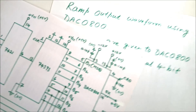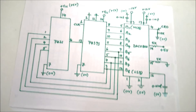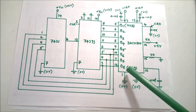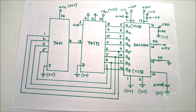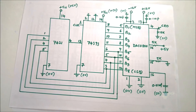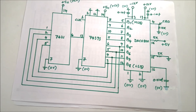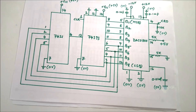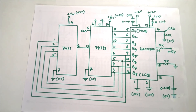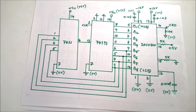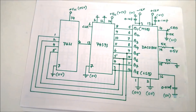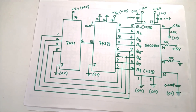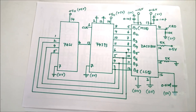Now coming to the main concept. If you give binary input B1 to B8 to the DAC, you will get an output in the form of a voltage. If you connect a resistance of 10k at terminal pin 4, you can get a voltage, and that voltage will be fed to the oscilloscope. Waveforms will be generated as we change that voltage with time — a point is generated for each voltage value.